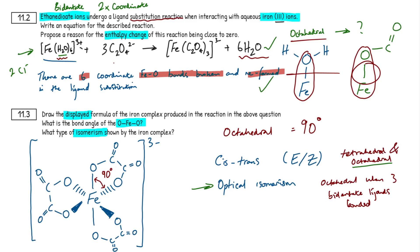For question 11.3, many students struggled to draw the displayed formula — those who got close often omitted the carbon atoms from the ligand. Use flashcards: on the front write 'what is the structure of the ethanedioate complex?' using a capital M for the central transition metal. There are two bidentate ligands you need to know: ethane-1,2-diamine and ethanedioate. 'Displayed' just means show every single bond.